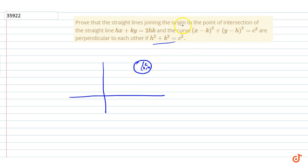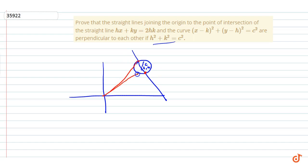Joining the origin to the points of intersection of the straight line and the curve — these are the points of intersection. When lines are drawn from the origin through these points, they should be at 90 degrees to each other. That is what we need to prove.